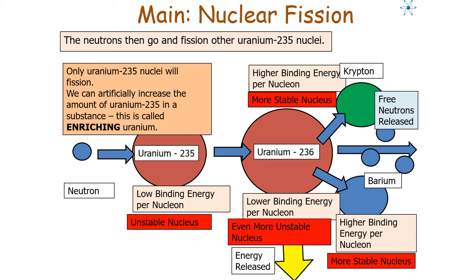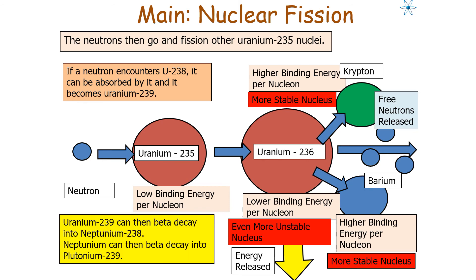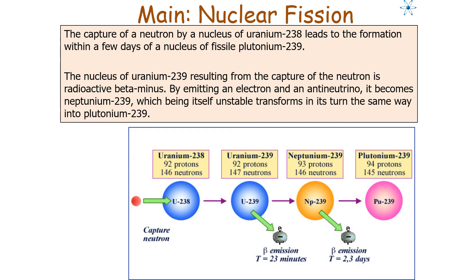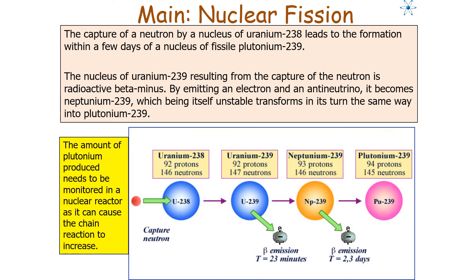We can artificially increase the amount of uranium-235 in a uranium substance — this is called enriching uranium. If a neutron encounters uranium-238, it is absorbed and becomes uranium-239, which beta decays into neptunium-238, which then beta decays into plutonium-239, but no fission occurs. The capture of a neutron by uranium-238 leads within a few days to formation of plutonium-239, which is also fissile. The amount of plutonium produced needs to be monitored in a nuclear reactor in case it causes the chain reaction to increase.